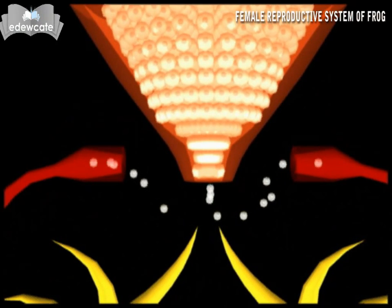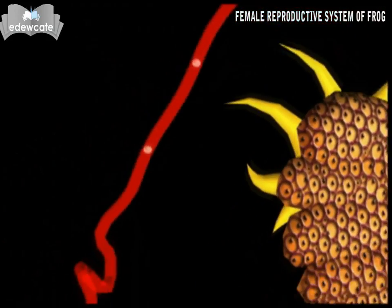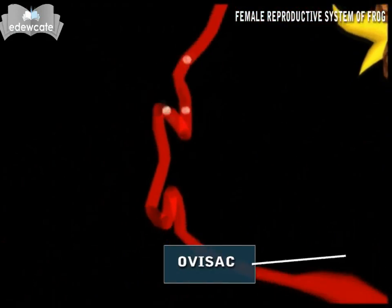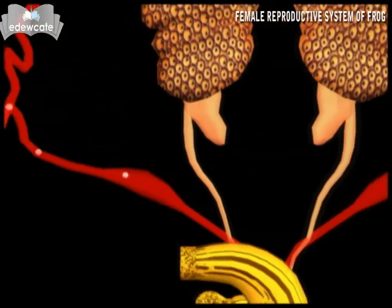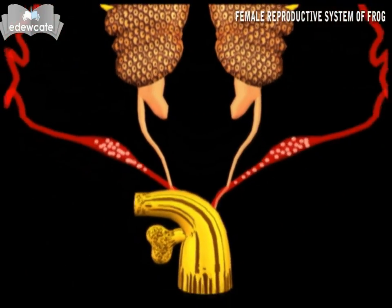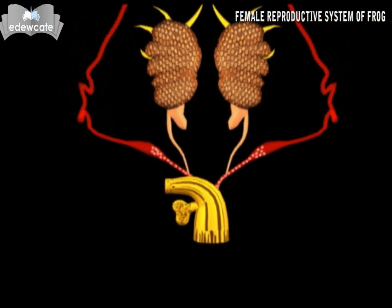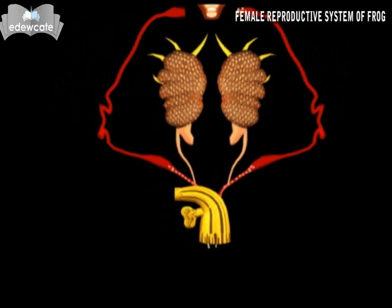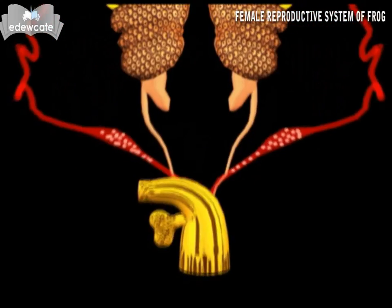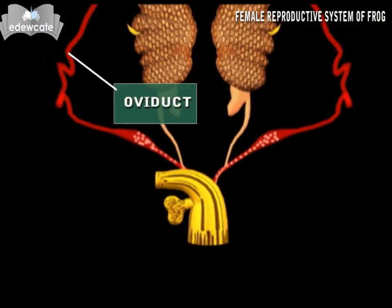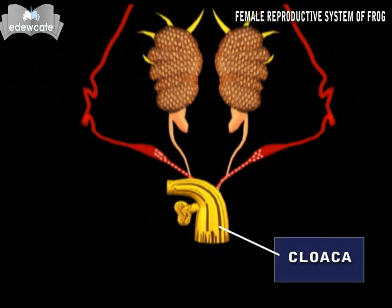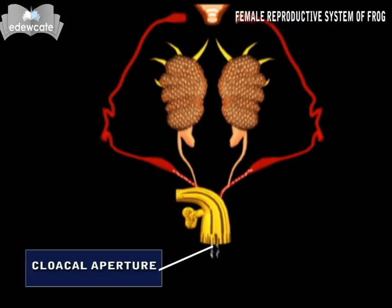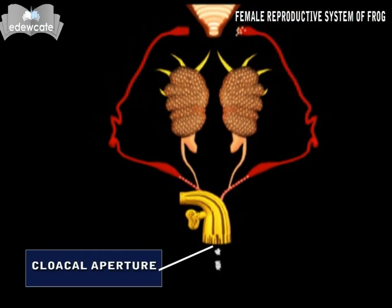Posteriorly, the oviduct is enlarged into a sac called ova sac or uterus. This stores the ova. The oviducts open into the cloaca. The ova are passed through the oviducts into the cloaca and are discharged out through the cloacal aperture.